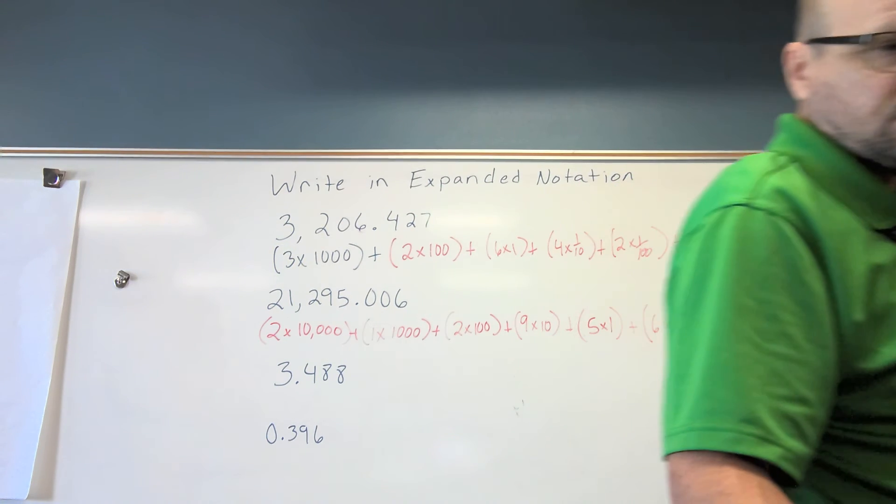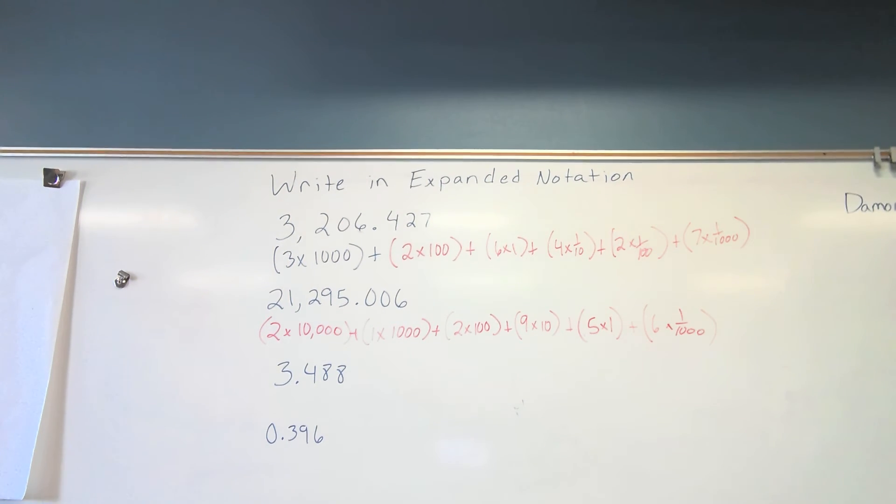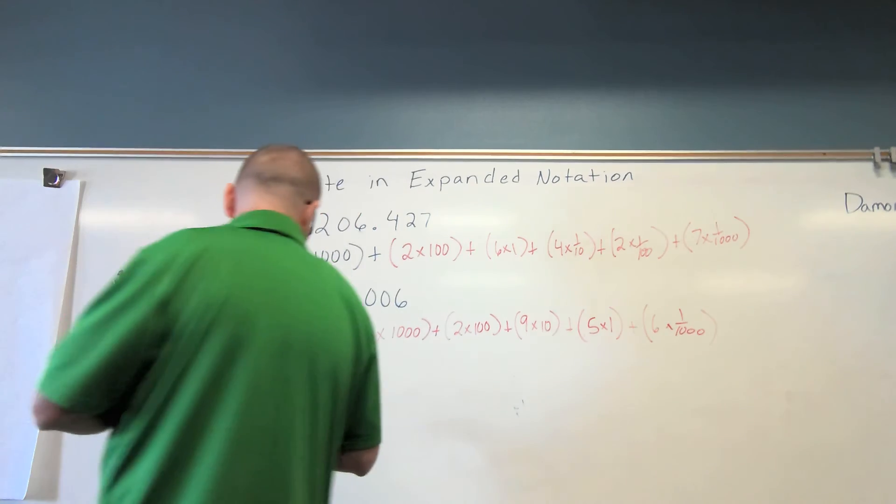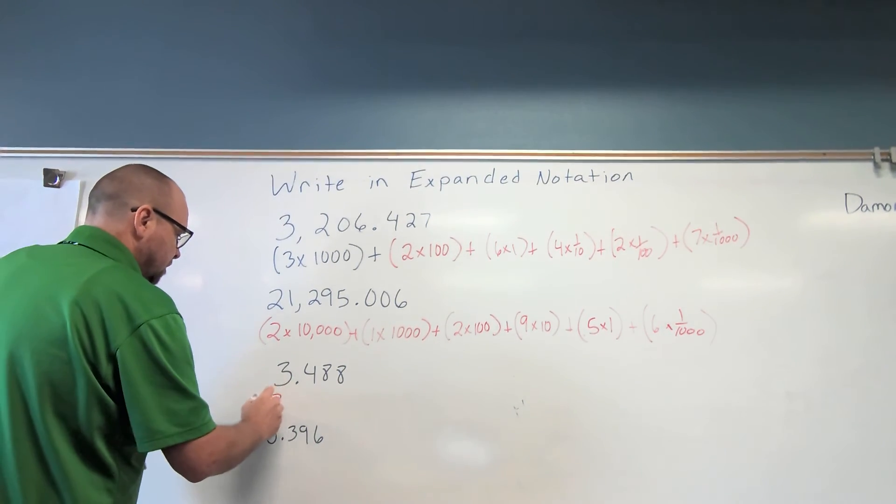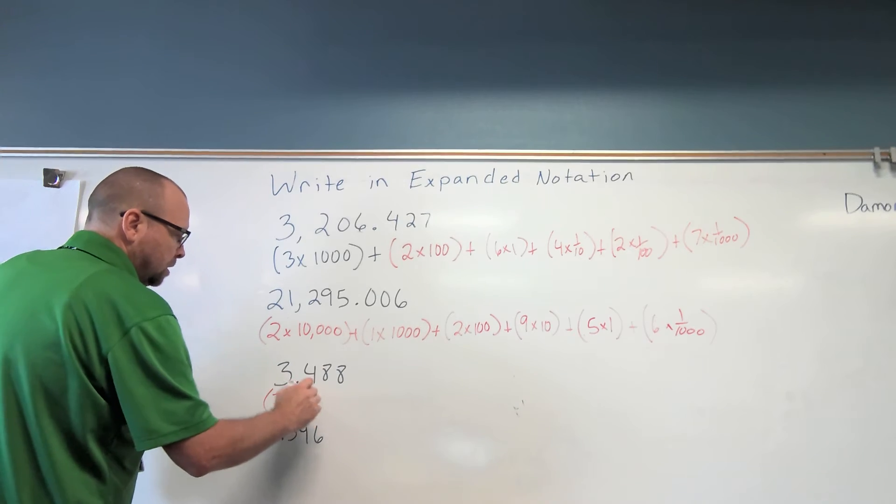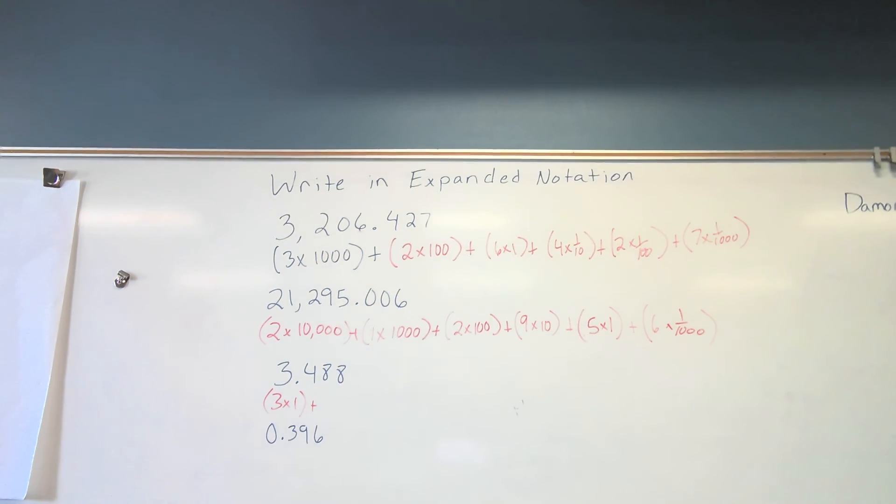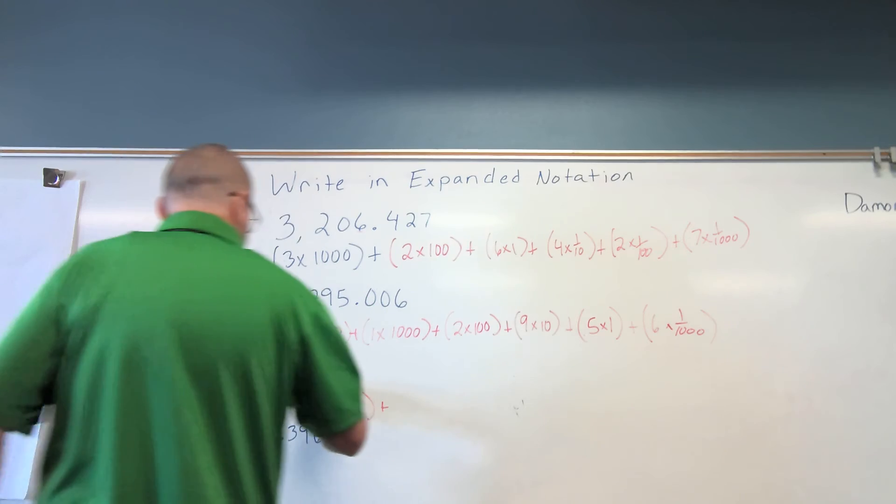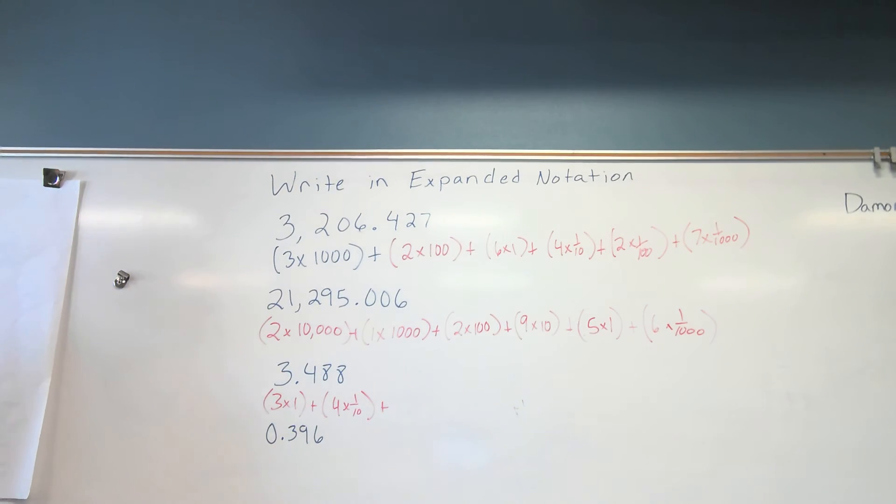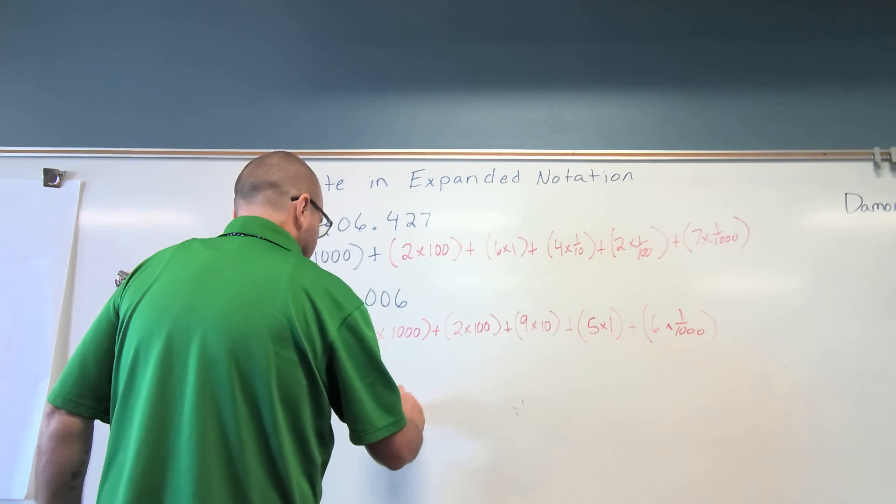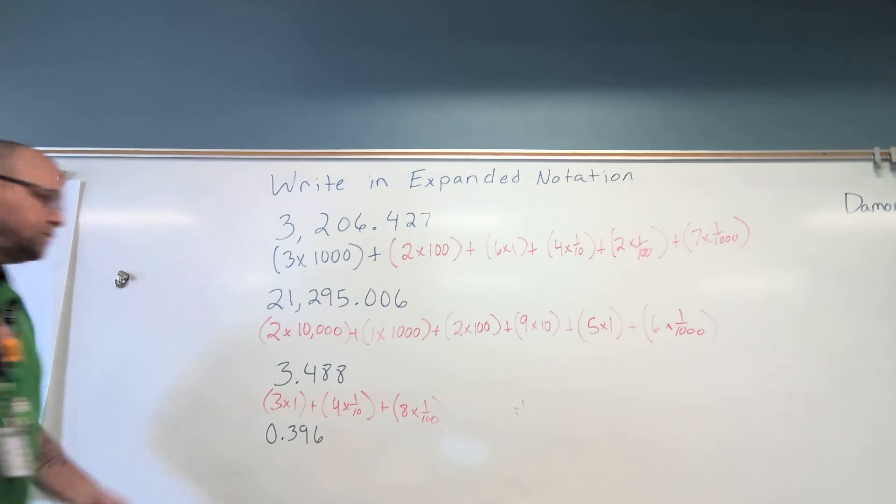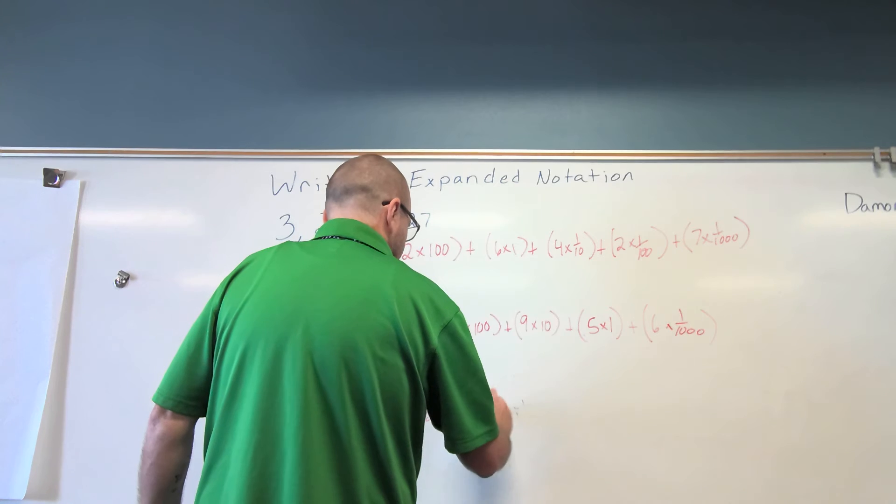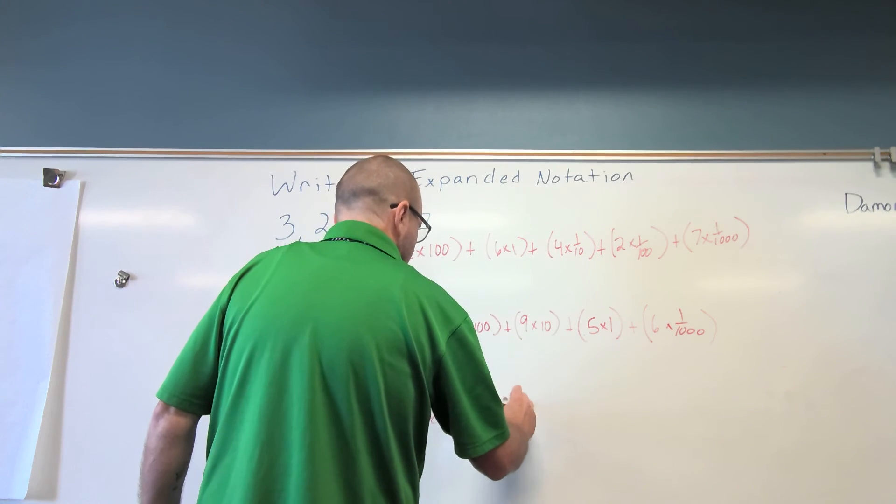Easy peasy. Alana, what's my biggest place value here? Three. And what place value is the three in? One. Here we go. Three times one. Plus, what place value is the four in, Alana? Tenths. Plus, four times one-tenth. Plus, what place value is that first eight in, Alana? Hundredths. Good. Plus, eight times one-hundredth. What place value is the second eight in? Thousandths. Plus, eight times one-thousandth.